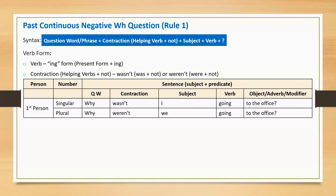First person singular: Why wasn't I going to the office? As per the syntax, this sentence begins with question word 'why', followed by contraction 'wasn't', subject 'I', main verb 'going', and question mark at the end.